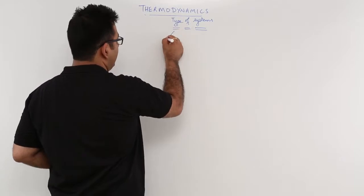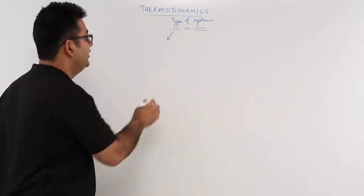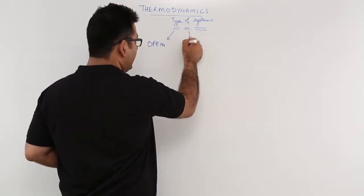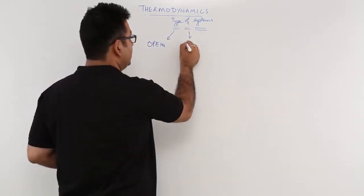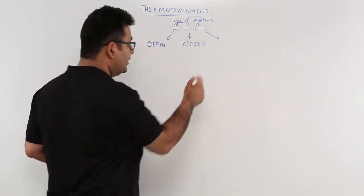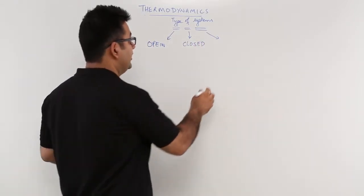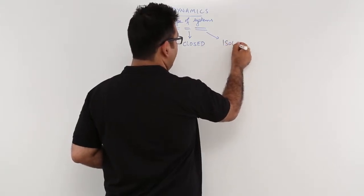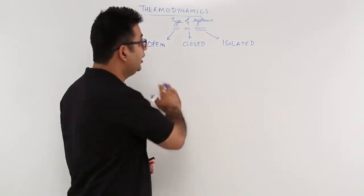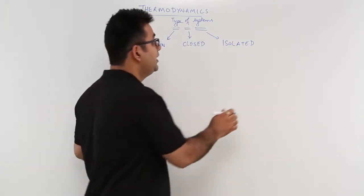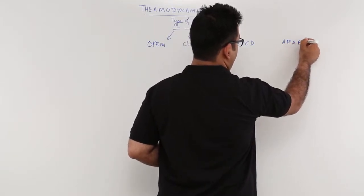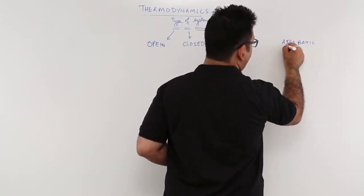The first type of system is an open system. The second kind of system is a closed system. And the third kind is an isolated system. There is one more kind we will discuss at the end of all three, and that is an adiabatic system.